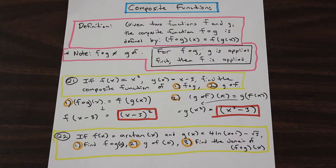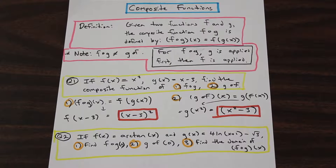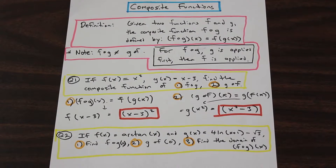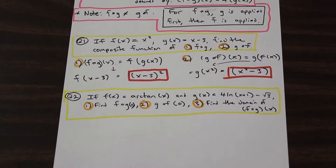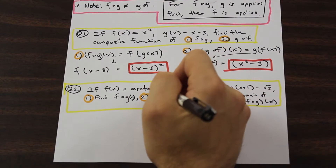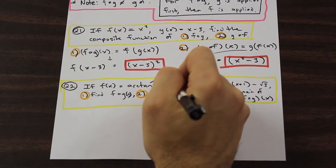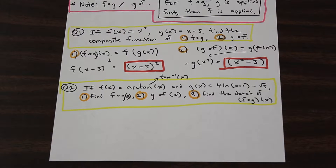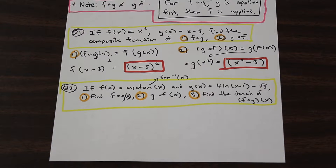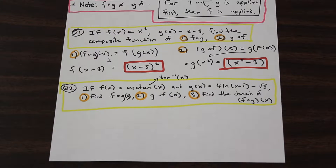So let's do a much trickier problem — question 2. If f of x is equal to arctan x — that's inverse tan, the same thing as tan inverse of x — and g of x is equal to 4 ln(x plus 1) minus root 3, find f circle g of 0, g circle f of 0, and find the domain of f circle g of x.